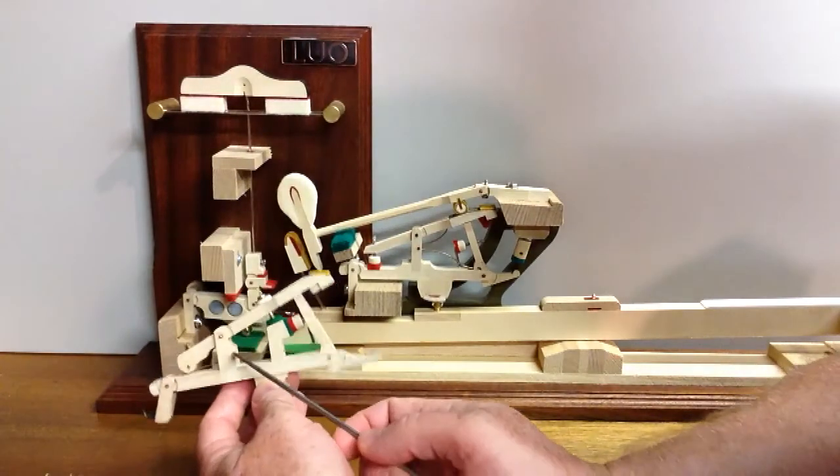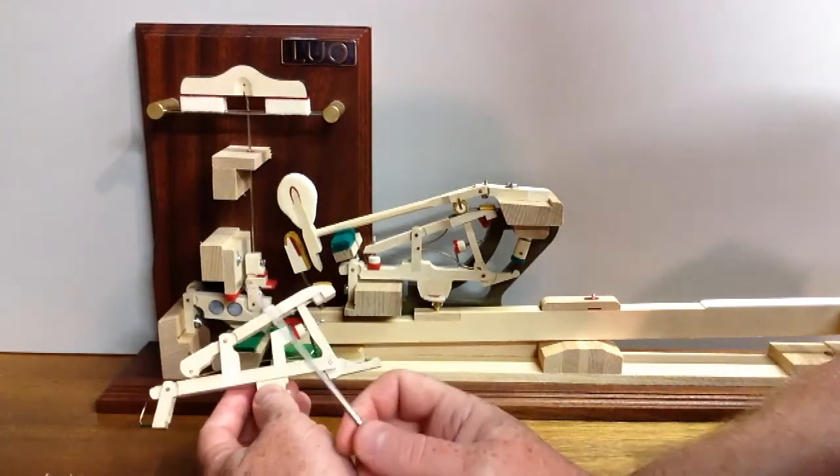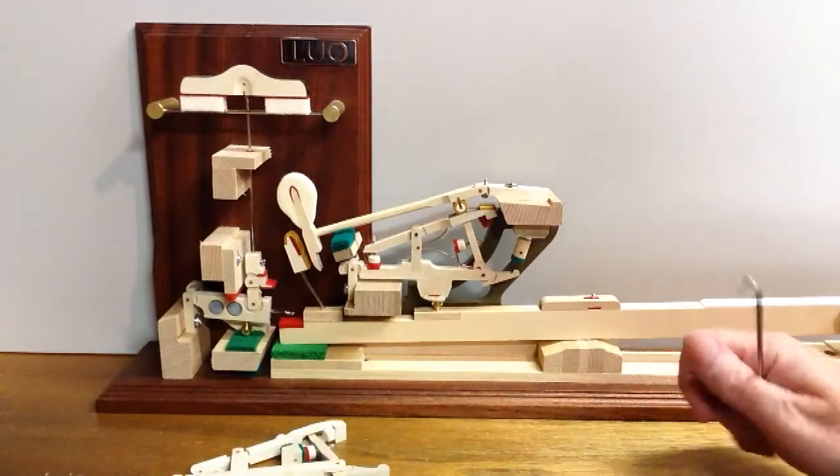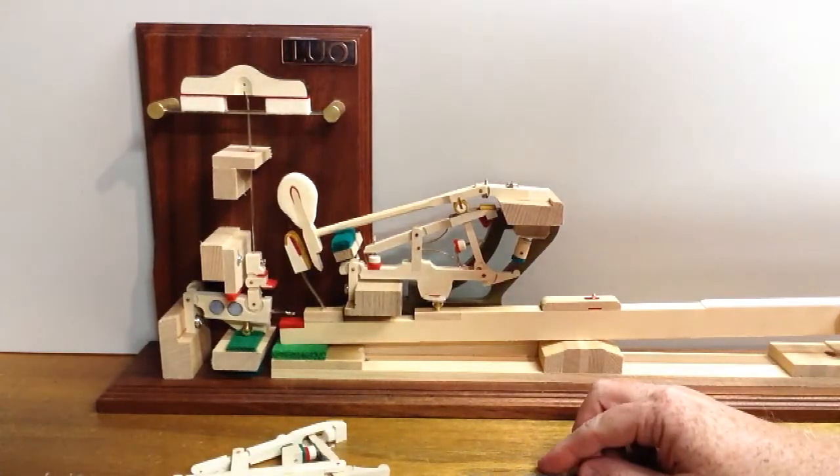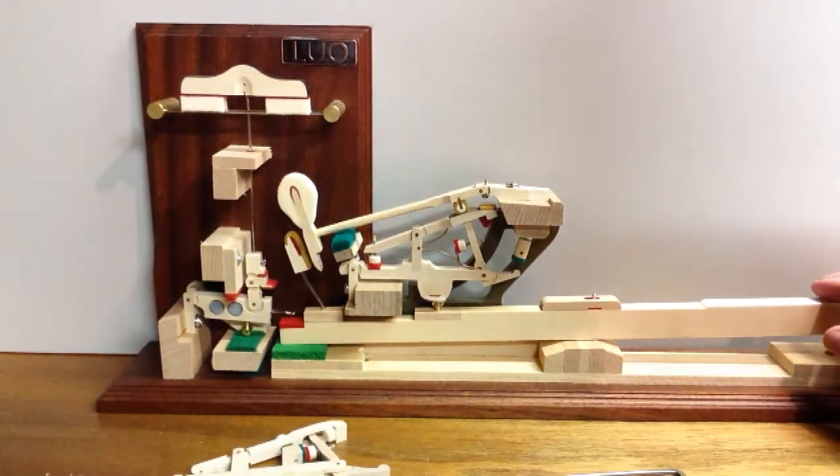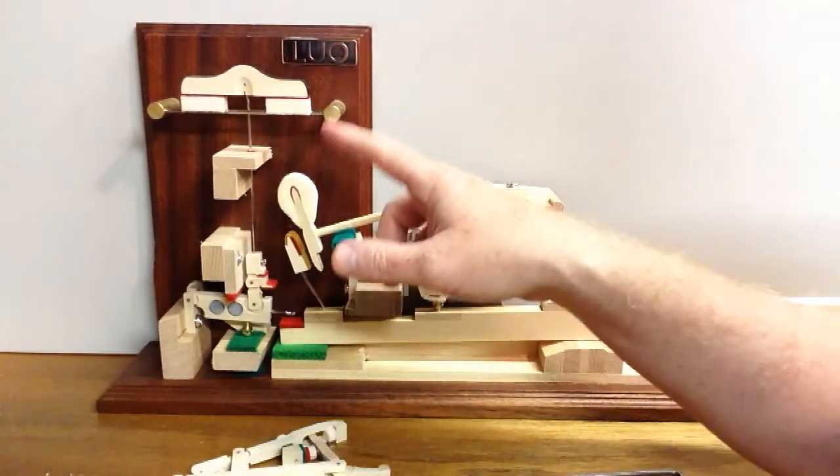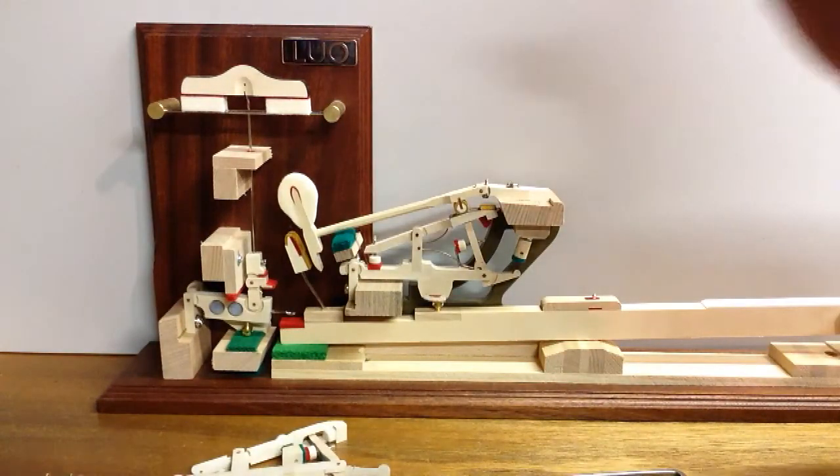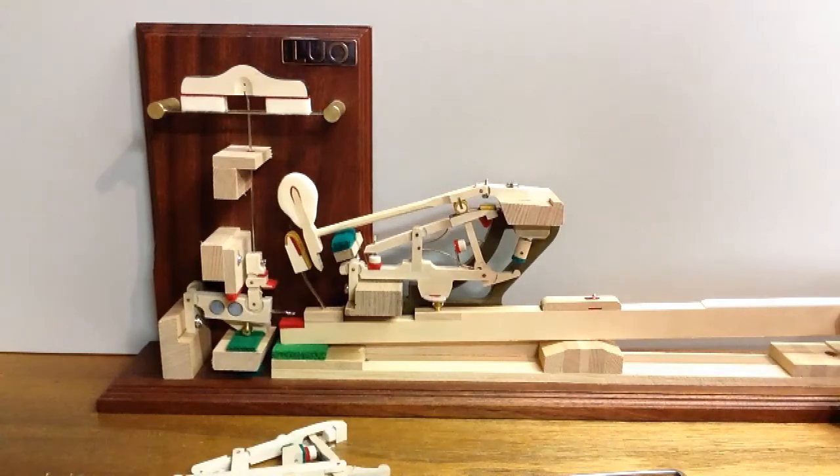The way you adjust the repetition spring is different on these two different types, but basically the way you check to see if it needs to be adjusted is there should be some rise in the hammer after it goes into check and if you let the key up a little bit.